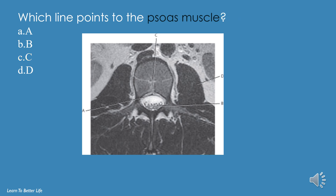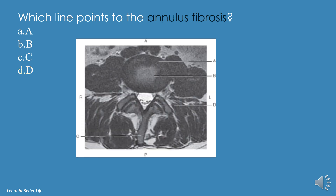Which line points to the psoas muscle? A, B, C, or D? The answer is D. Which line points to the annulus fibrosus? A, B, C, or D? The answer is A.